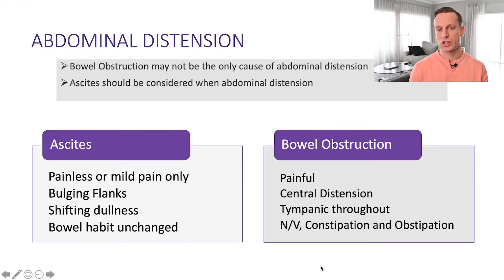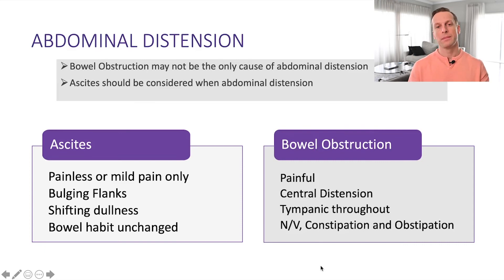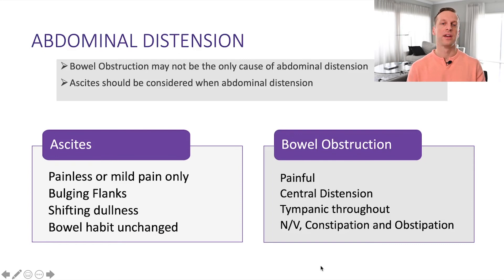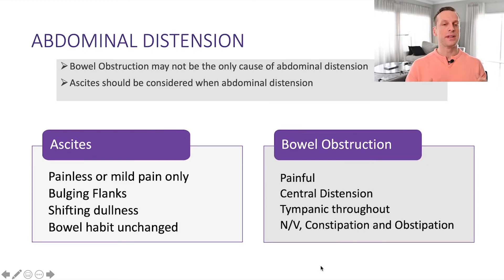Most patients with bowel obstruction present with abdominal pain and distension, nausea, vomiting, and the key feature of obstipation. But occasionally a patient will present primarily with abdominal distension, and an important differential for that is ascites. Ascites is essentially fluid in the peritoneal cavity that doesn't belong there — it can have liver causes, malignant causes, or cardiogenic causes — and should be differentiated from bowel obstruction.